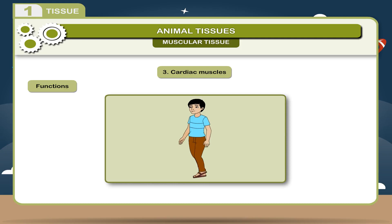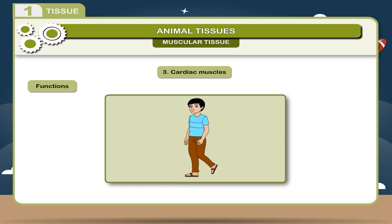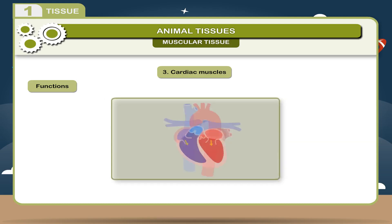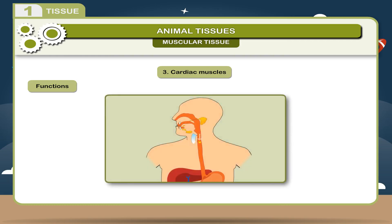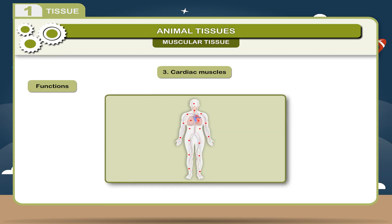Functions: 1. The muscular tissues help in the movement of various parts of the body and thus help in locomotion. 2. They also cause the movement of internal organs. 3. They help in the movement of food in the alimentary canal. 4. They also help in pumping of the blood to the various parts of the body.